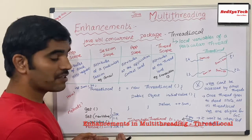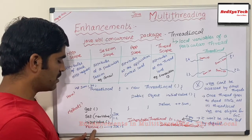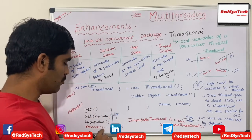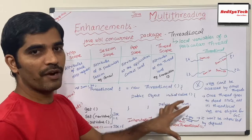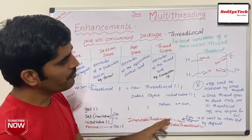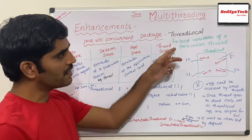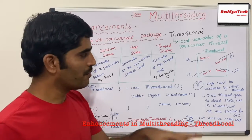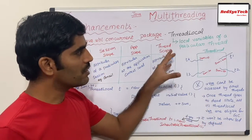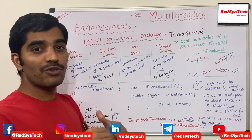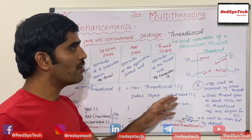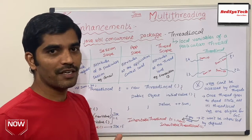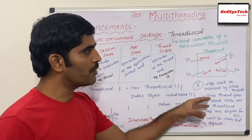In JDK 1.5, one more method was added: remove(). If you want to remove a particular attribute for a particular thread, you use the remove() method. There are some key important points about ThreadLocal. First, since ThreadLocal is local to a particular thread, it can only be accessed by that thread — not by other threads. Second, once a thread goes from an active state to a dead state, whatever variables or scope the thread held will be available for the garbage collector to clean up.